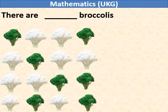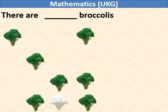There are blank broccolis. Let us remove cauliflower from the picture. If you count the broccolis, it is 7.